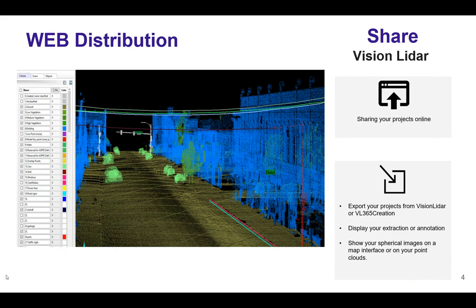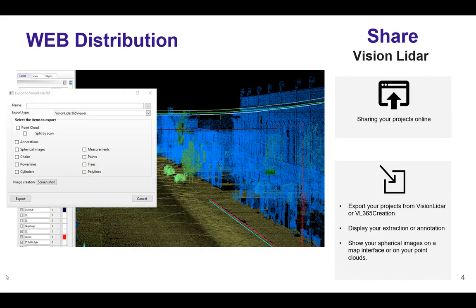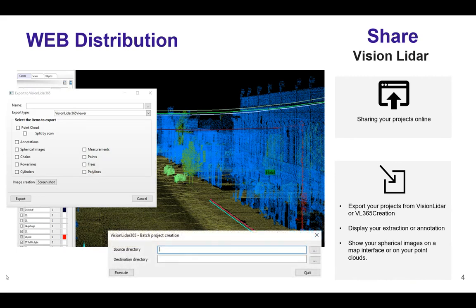As you can see on the screen, this is Vision LiDAR itself. In the software, you will be able to classify your point cloud, colorize it, and perform feature extraction as required by your client in their deliverables. Once you are done with the project, you will be able to extract your work to Vision LiDAR 365. You will have the option to choose the elements you want to extract — such as annotations, images, elements extracted within the point cloud, power line cylinders, and even your measurements. If you already have Vision LiDAR with projects done, you will also have access to a batch creation tool, which gives you the possibility to create multiple Vision LiDAR 365 projects at once.